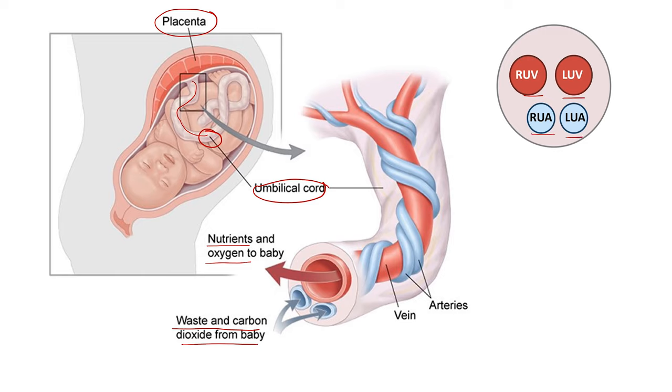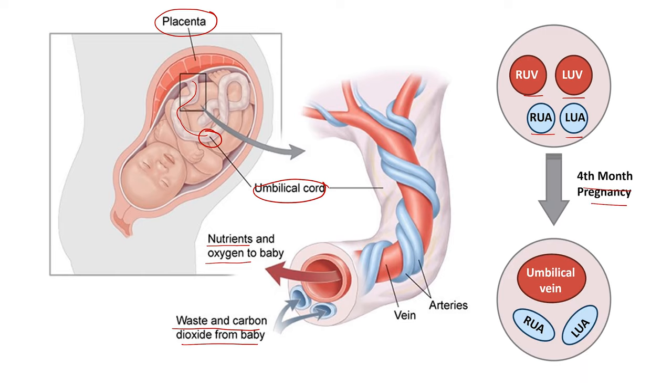But in the first four months of pregnancy, the right umbilical vein disappears. After that, there are two umbilical arteries and one umbilical vein.